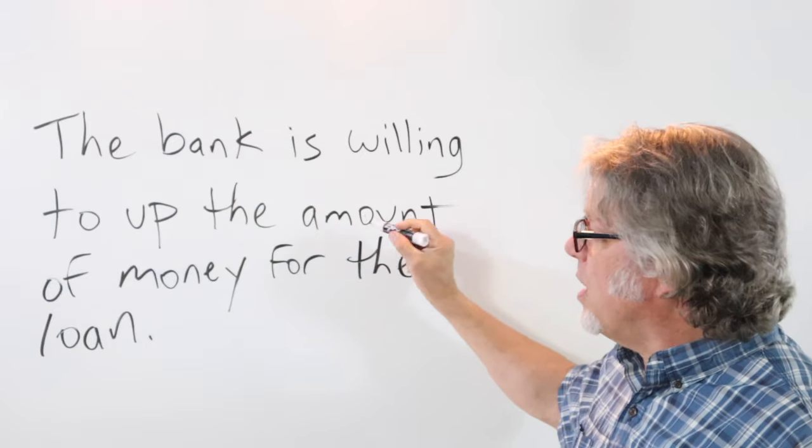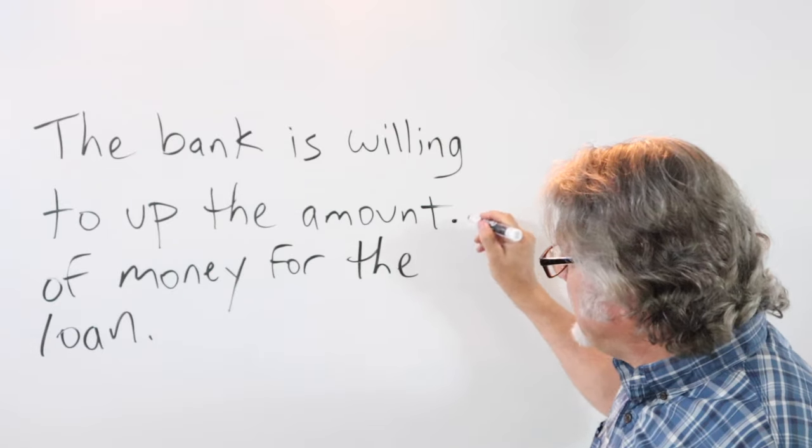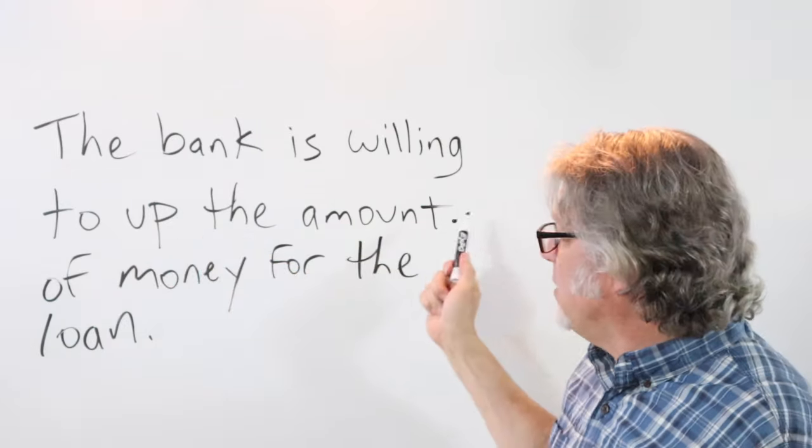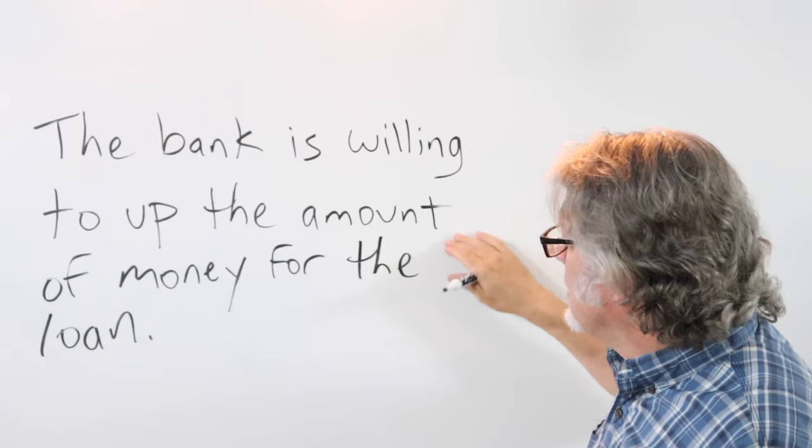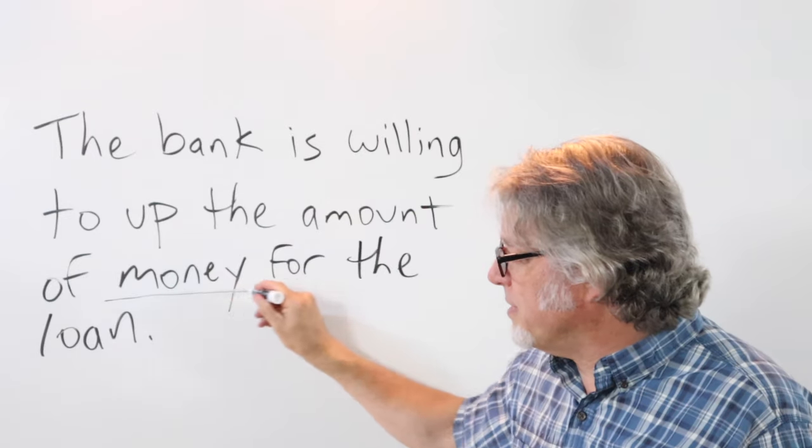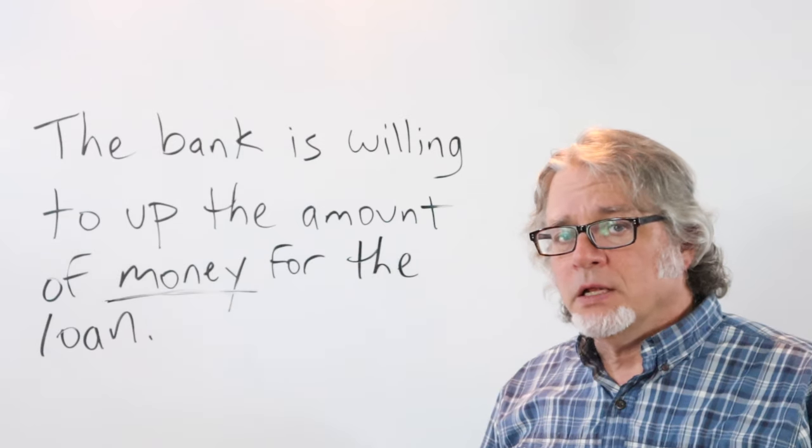The bank is willing to up the amount. We could stop the sentence right here and take this off. Following this, however, up the amount of and then whatever the noun is can go here. This is often used for money.